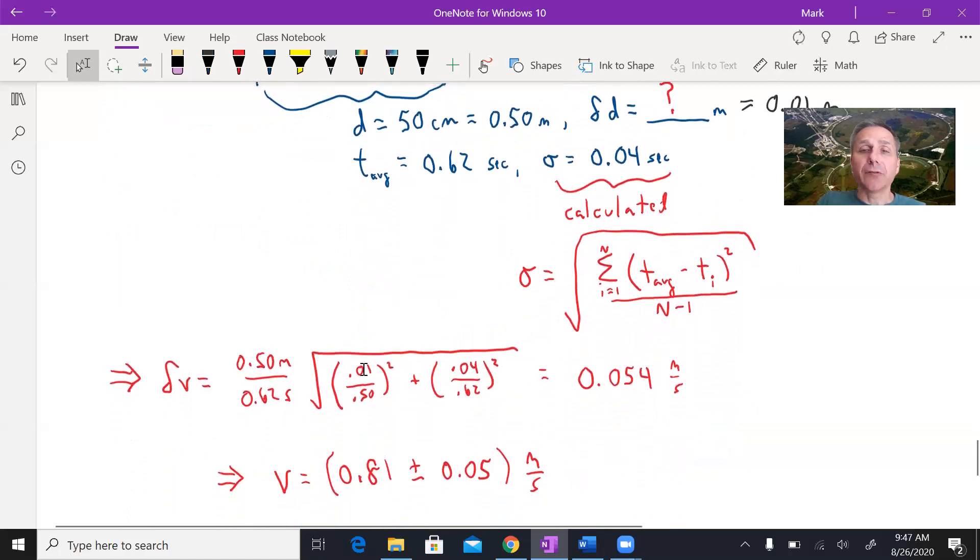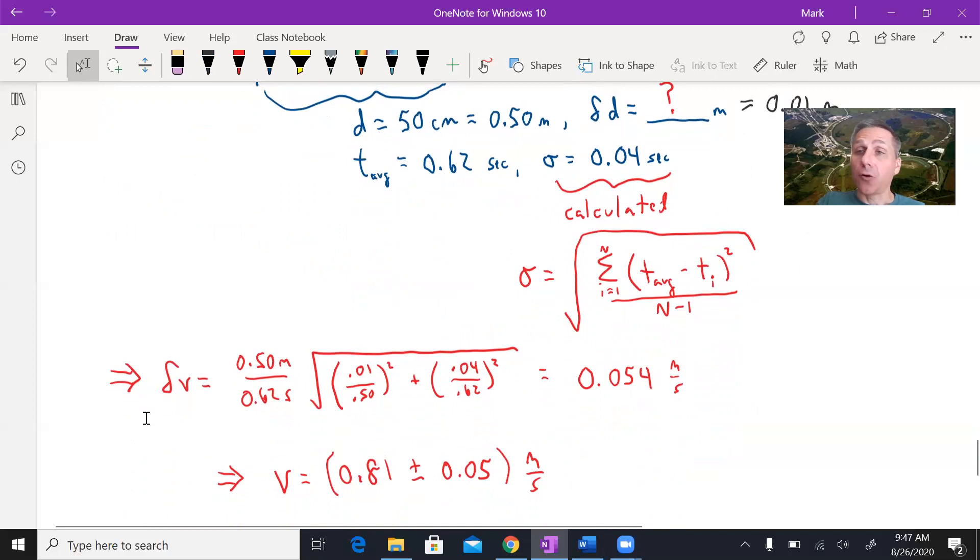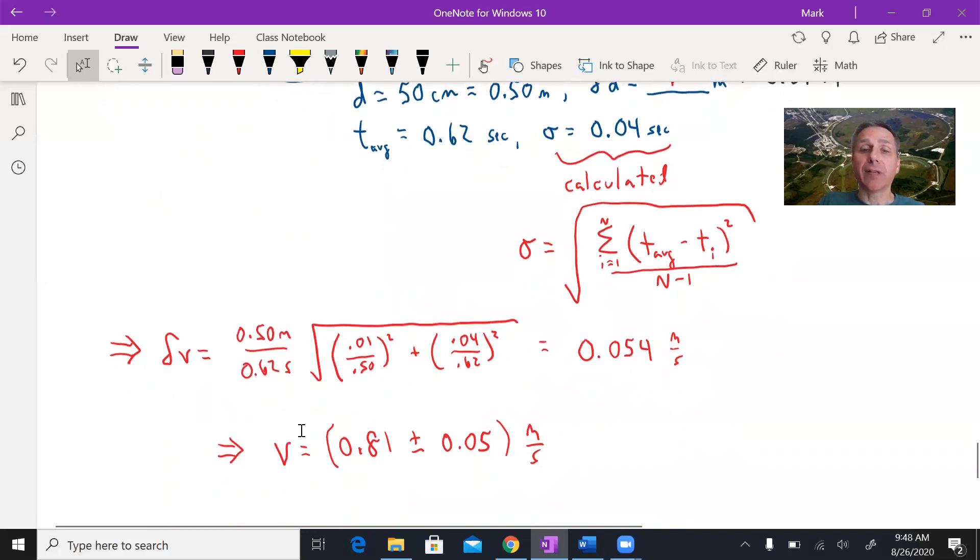So with those numbers, here's what it looks like when you plug it into that quadrature thing. Out front is the result. Okay, your distance divided by average time. That turns out to be 0.81 meters per second.